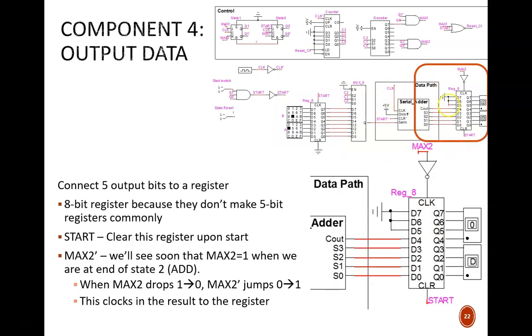On the other end of the data path is the output data. Again, we are using a register that must clock in data at the proper time. We'll see the logic of variable max2 soon. Max2 will be high during the last clock cycle of the add phase. On the next clock cycle, it drops high to low. This not gate flips that to low to high, which means a positive edge triggers this register at the moment the addition is complete, just like we wanted. Also, I decided to clear this register at the start of a new addition. That doesn't hurt, but wouldn't actually be necessary.